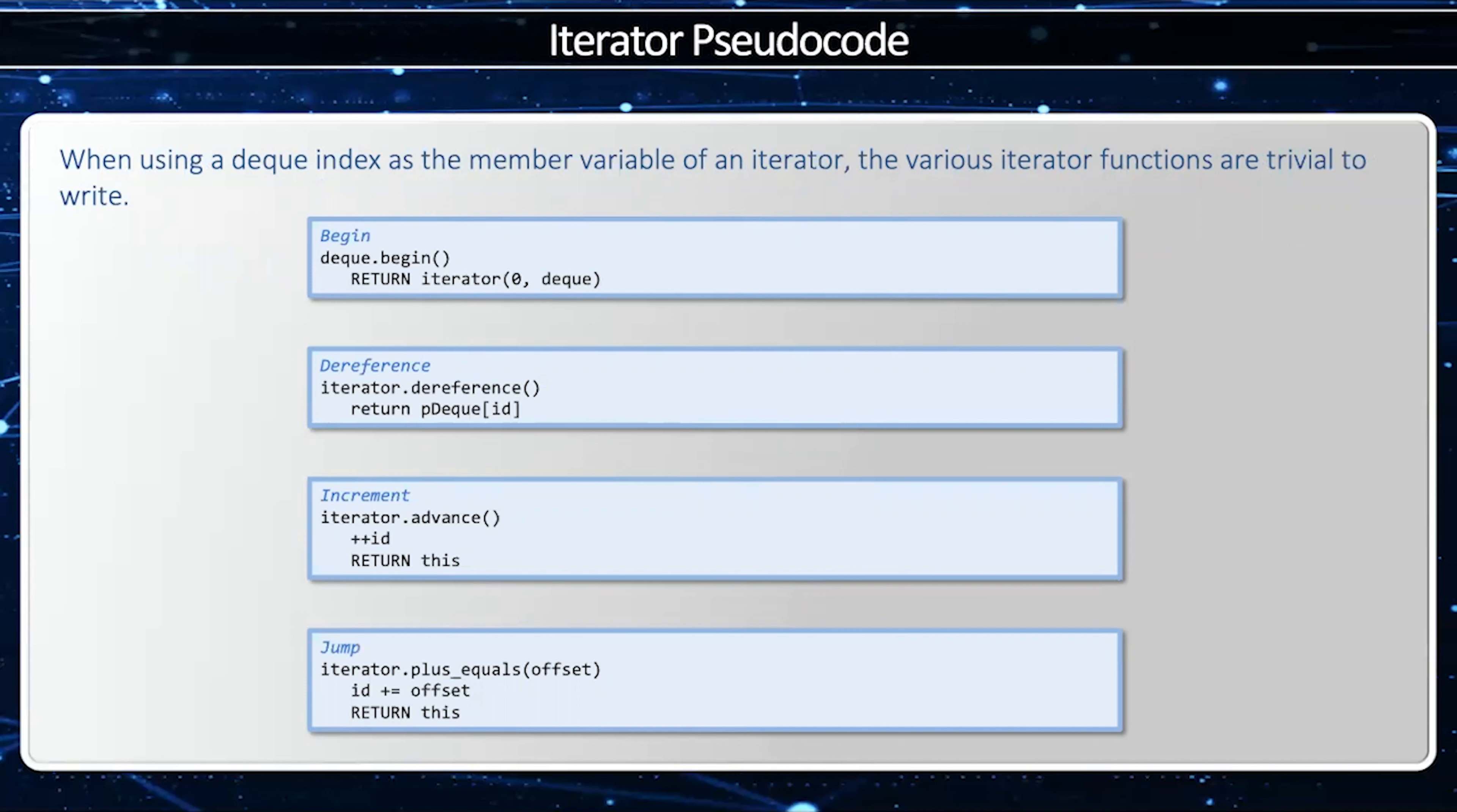Begin is done by instantiating a deck iterator with a zero deck index. Dereference is carried out by using the array index operator. Advance is carried out by incrementing the deck index, and we can even do the plus equals operator. This is done by adding an offset onto the deck index. All these are done very simply once we have an index to the deck as well as a reference to the deck itself.